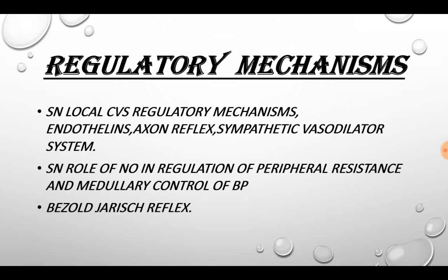Moving on with the regulatory mechanisms. This is an important chapter and most of the questions are asked from this chapter only. Short note on local CVS regulatory mechanisms, endothelins, axon reflex, sympathetic vasodilator system, short note on role of nitric oxide in regulation of peripheral resistance, short note on medullary control of blood pressure, and Bainbridge Reflex — all these questions are important.